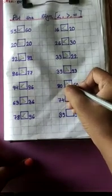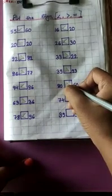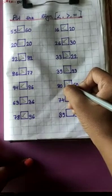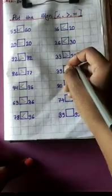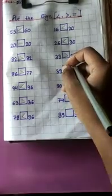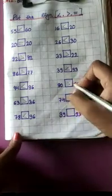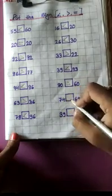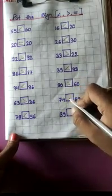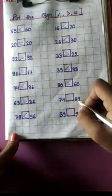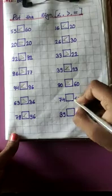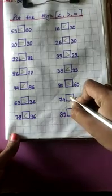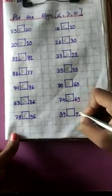80 is greater than 60. Now next: 74 and 69. 74 is greater than 69.